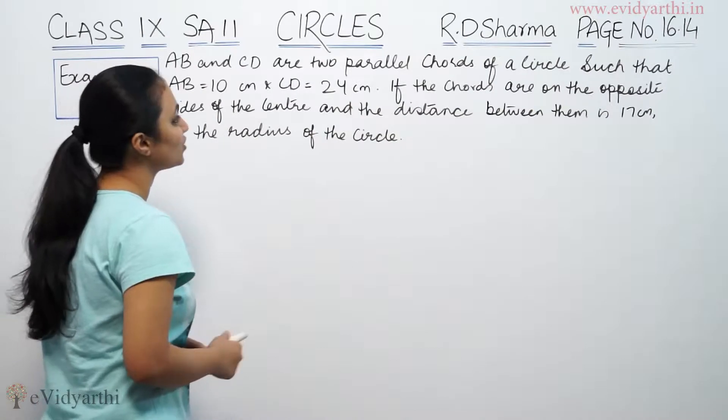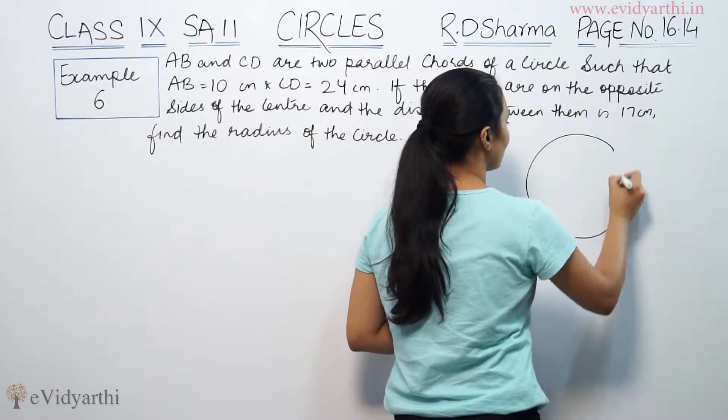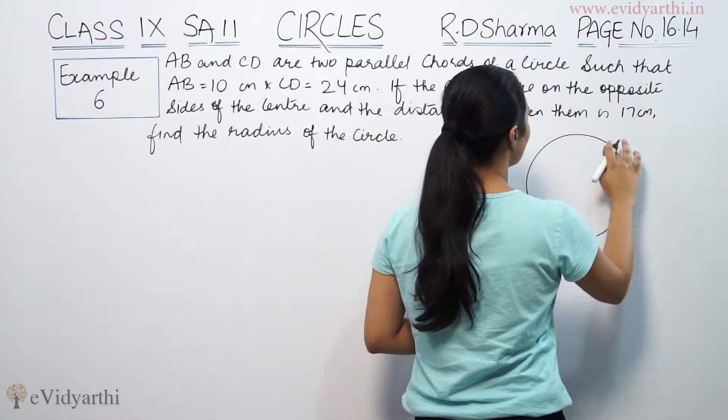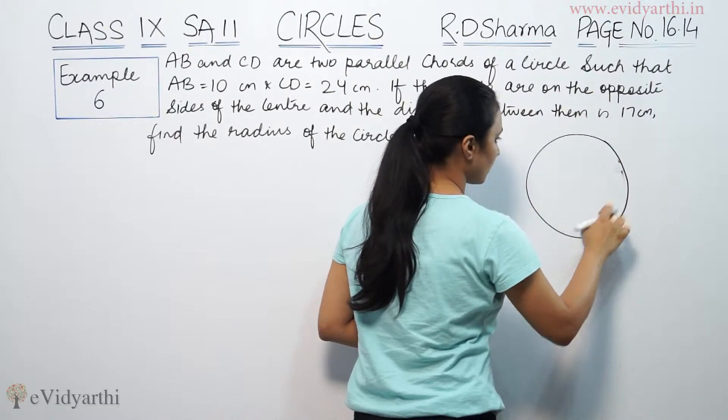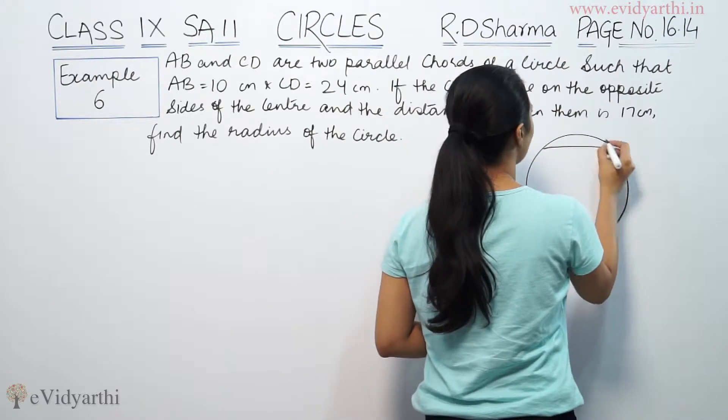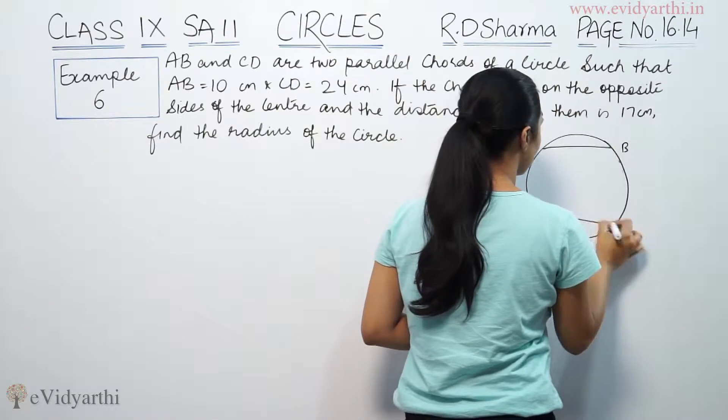This says AB and CD are two parallel chords of a circle. This is a circle and AB and CD are parallel chords. This is AB chord and this is CD, another chord.